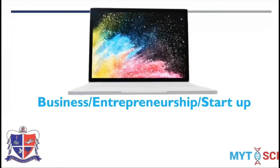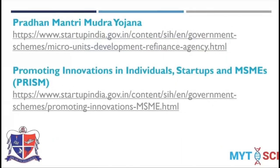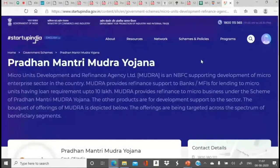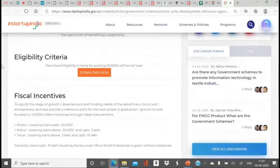There are also temporary positions like SRF, JRF, project assistants, project officers, young professionals, senior and junior fisheries consultants, aquarium assistants, and technical trainees. In the private sector, opportunities include QC and microbiologist roles in seafood processing and export companies, and hatchery manager, farm manager, and fish farm technician positions. Now I'll talk briefly about business, entrepreneurship, and startups.